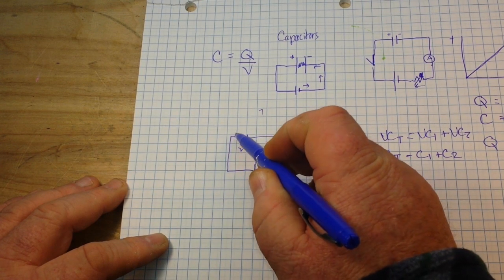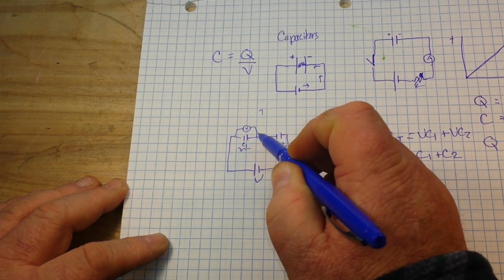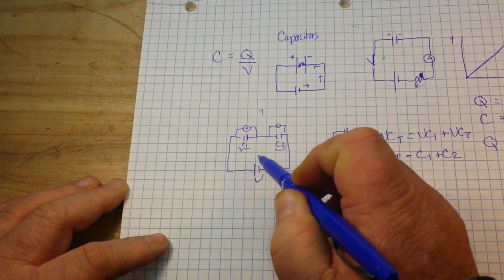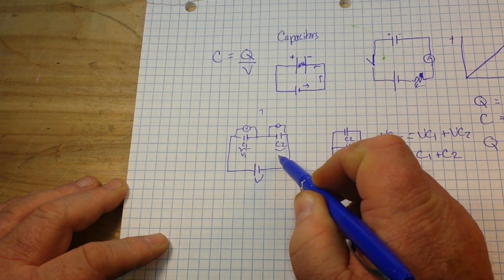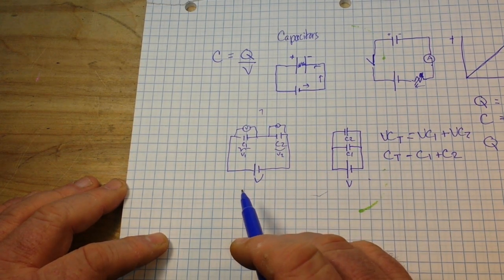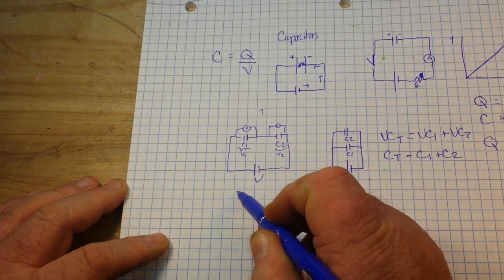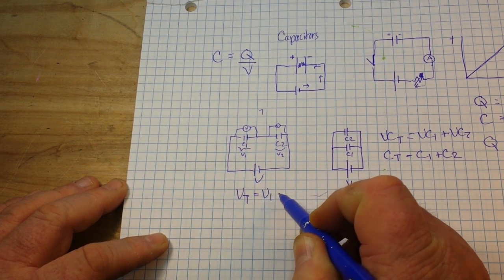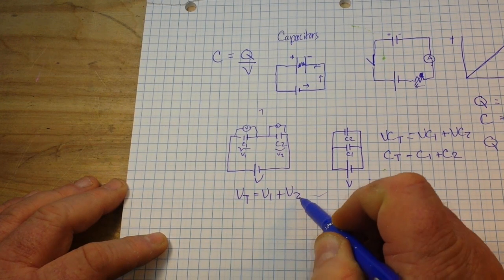If we were to put in a meter and measure these voltages, call that voltage 1 and voltage 2. So, according to Kirchhoff's law, we know that V total must equal V1 plus V2.